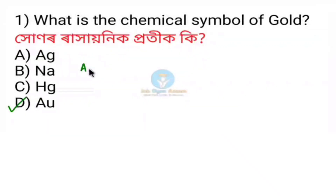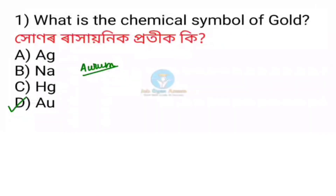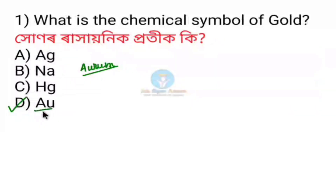This is Latin. The Latin name is called Aureum. The scientific name is the Latin name, and gold's Latin name is Aurum. So the chemical symbol of gold is Au.